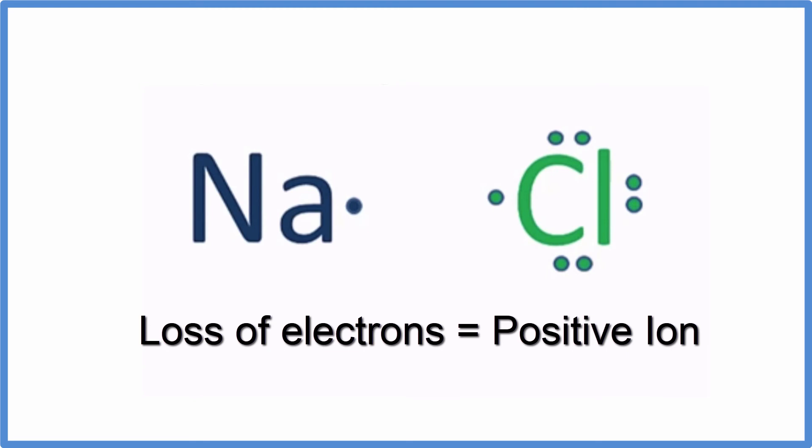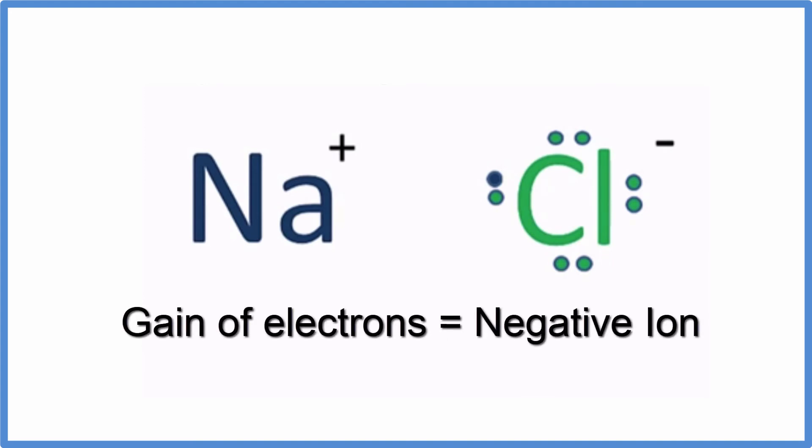It's important to understand that when an atom loses an electron, negative charge, it becomes positive. The atom that receives that electron gets the negative charge and becomes a negative ion.